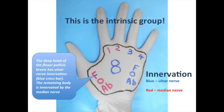The final muscles include the 4 lumbricals, designated by the numbers 1, 2, 3, and 4. These muscles help flex at the proximal interphalangeal joint while aiding in extension of the distal interphalangeal joint. All the muscles indicated in blue are innervated by the ulnar nerve; those in red are innervated by the median nerve. Take note that the deep head of the Flexor Pollicis Brevis has ulnar nerve innervation, indicated by the blue crossbar, while the remaining body is innervated by the median nerve.